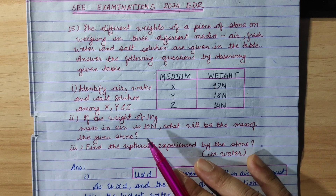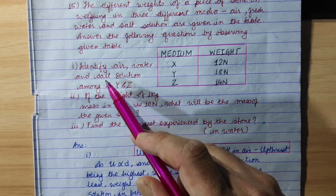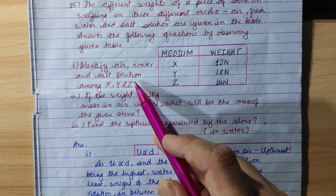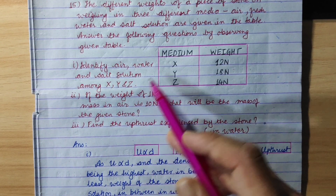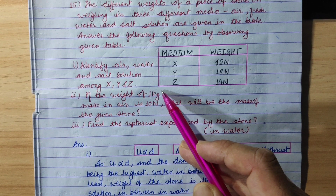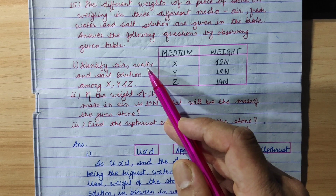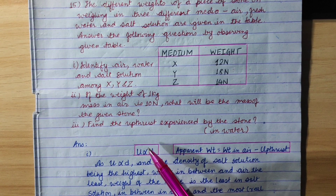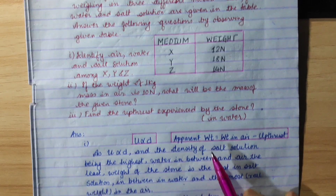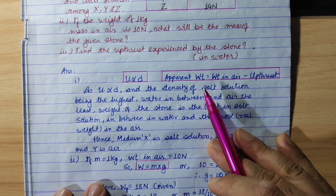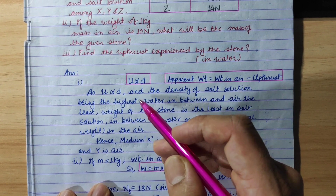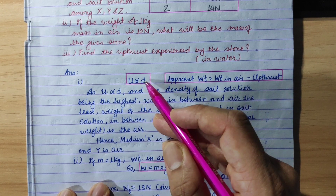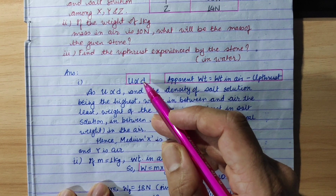Question number 1: Identify air, water, and salt solution among X, Y, Z. Let's begin. First, we will explain what the problem is. Upthrust is directly proportional to the density of the liquid or fluid.